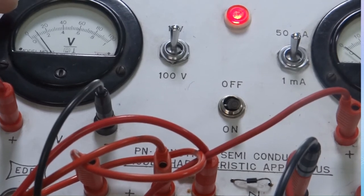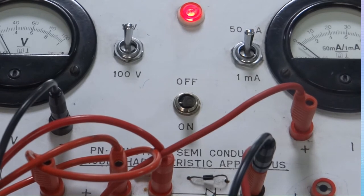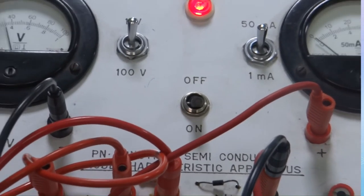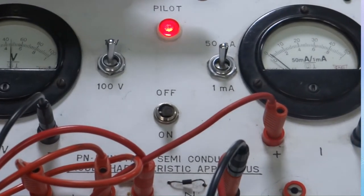As you can see, now it is 0.1 volt but the current is still 0. Now it is 0.2. Even at 0.5 volts, current is still 0.